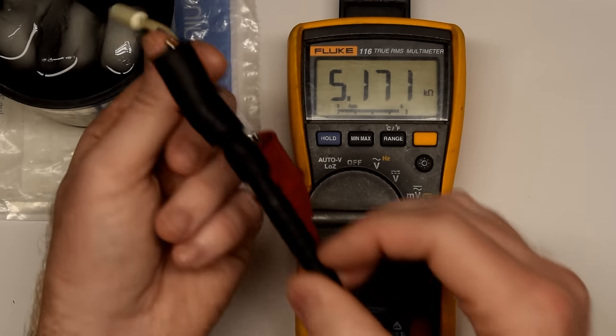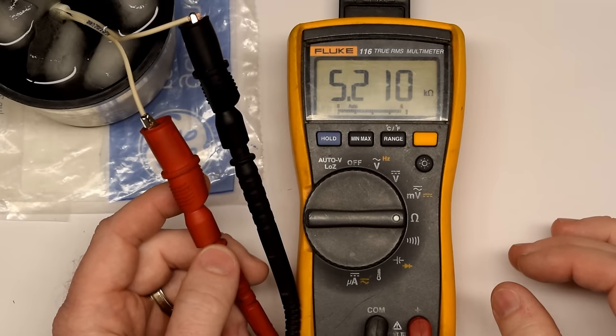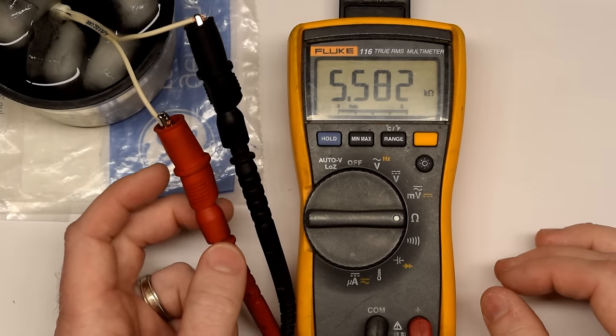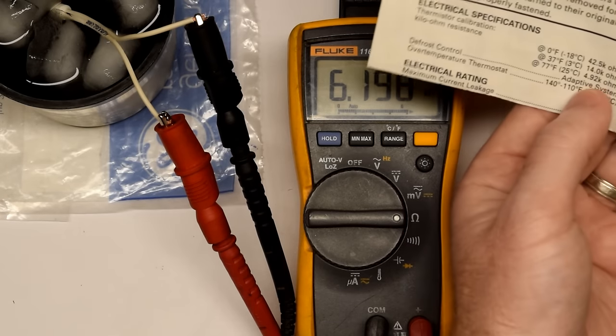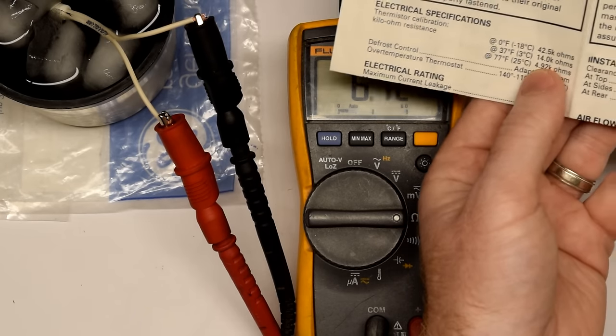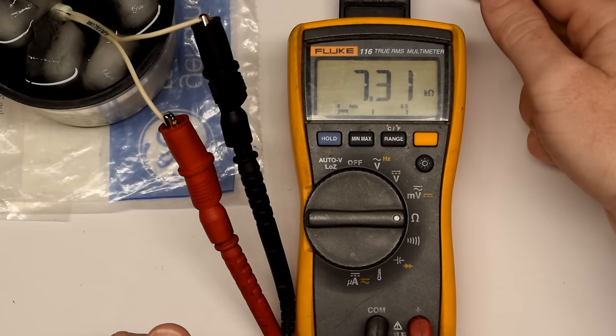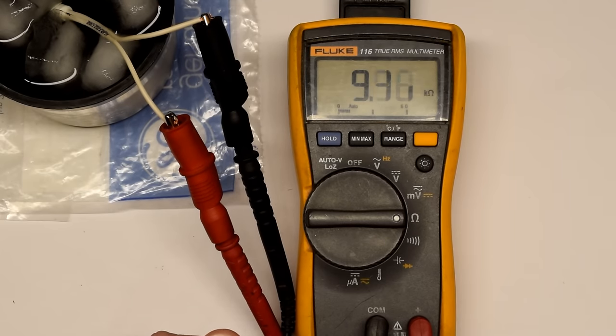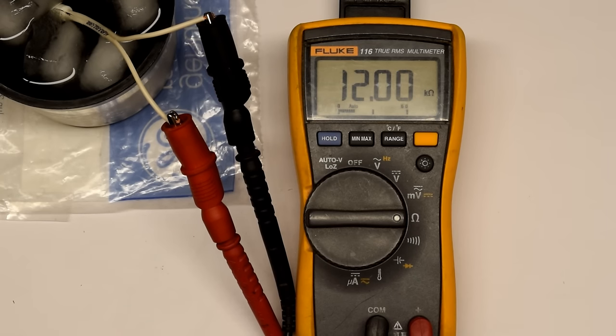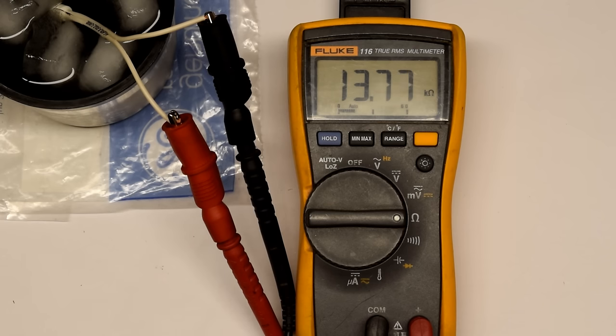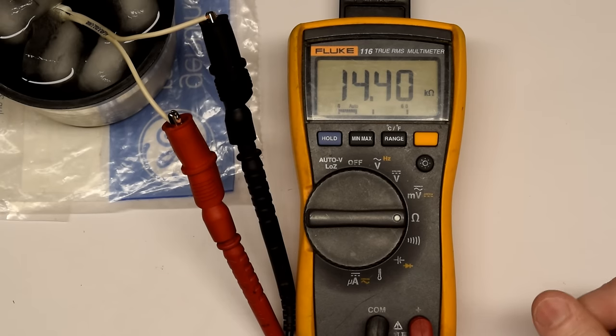Now if I stick this in the ice water, which is about 36 degrees, somewhere between 34 and 36 degrees, we're going to see this resistance climb. And it's going to climb to roughly 14K ohms. So let's see how it does. So here you can see it's starting to slow down a little bit. And it puts us in the ballpark of that 14K ohms that we were talking about. So that's how you test one of these thermistors.